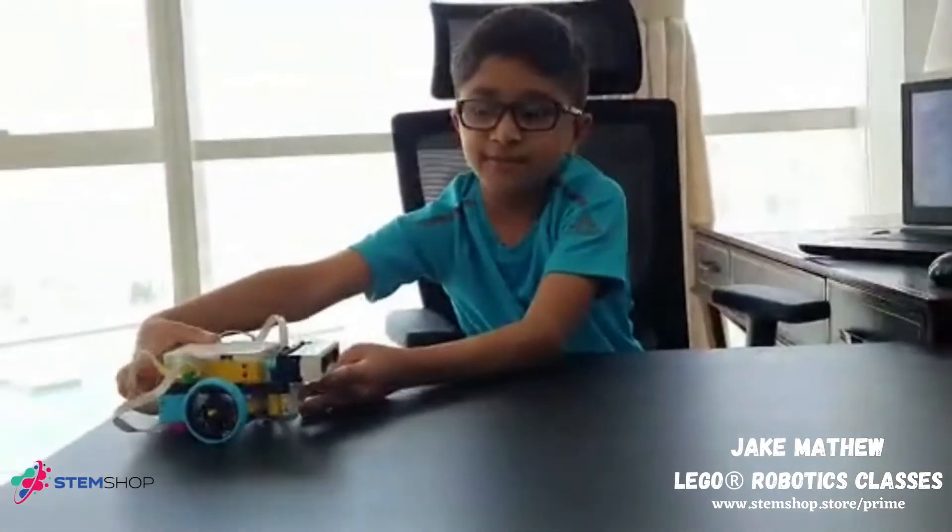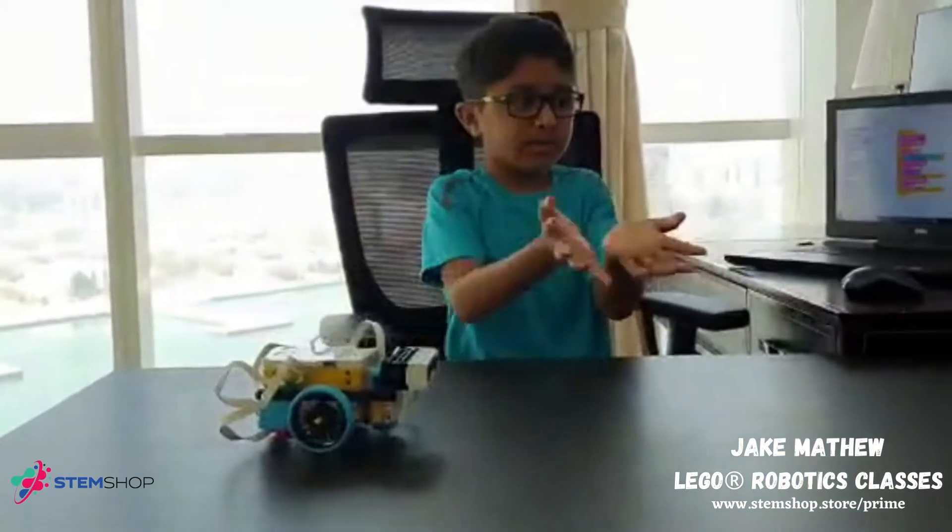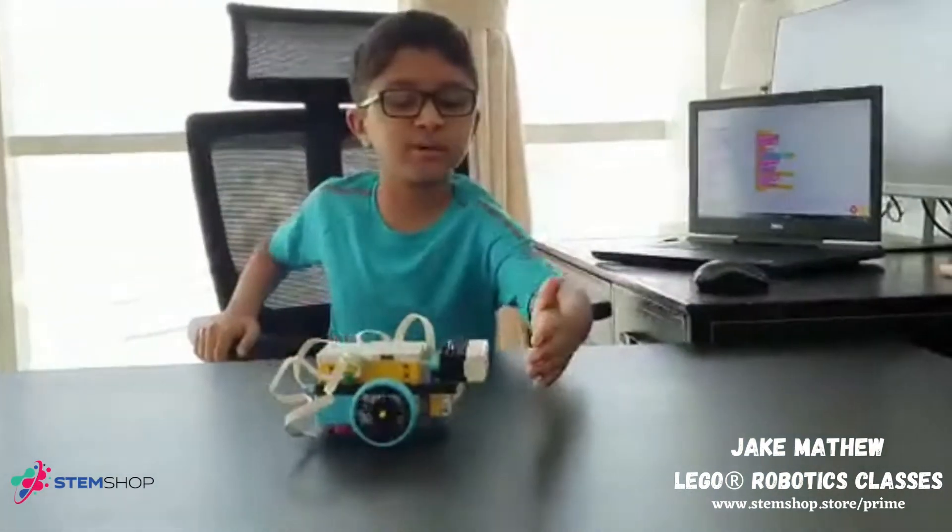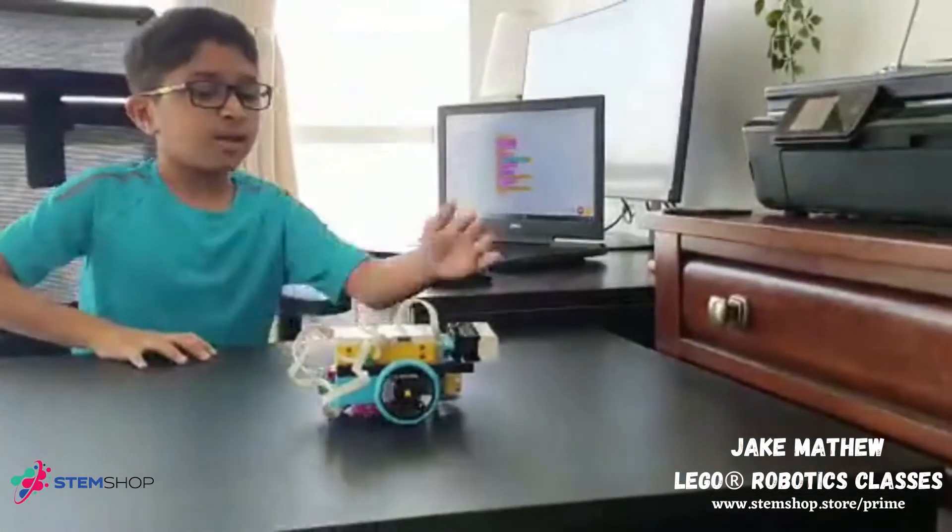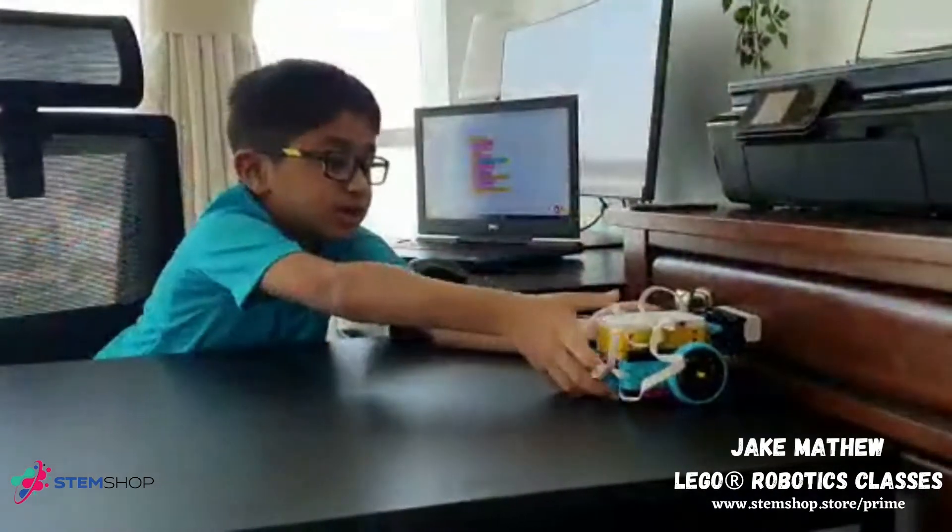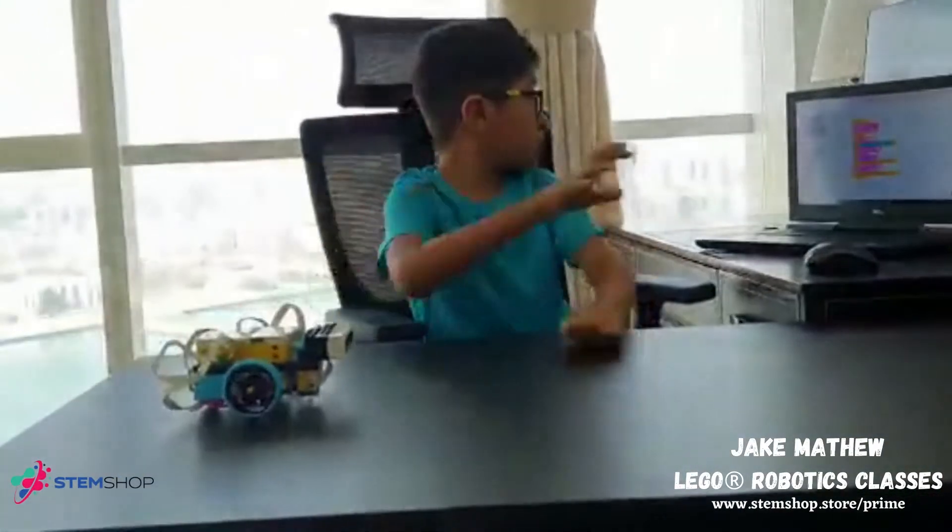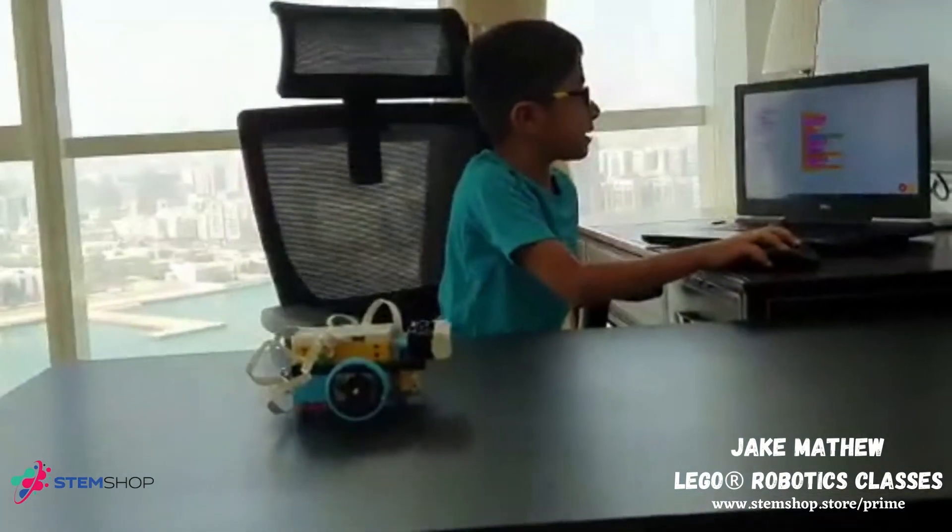Because whenever you see an object, it goes very fast. Because right now, it's nothing same. But when I show my hand, and it goes. Because, because it sees this table, so, it needs to stop. So, you just press this red one, and that means stop.